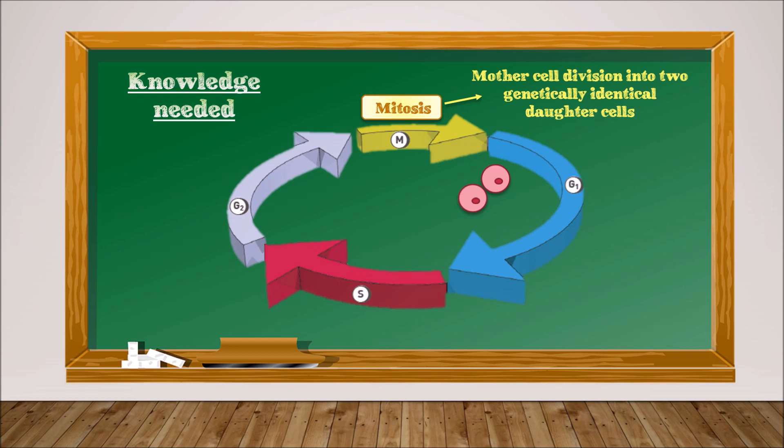Mitosis is a mother cell division into two genetically identical daughter cells. But to be able to form these daughter cells and share the genetic material equally,